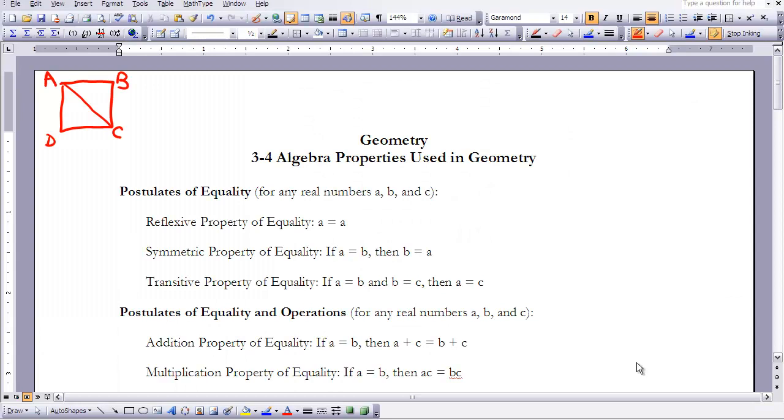This is Geometry Lesson 3-4, Algebra Properties Used in Geometry. In Algebra last year, you studied all kinds of equations, and you learned how to solve an equation for a variable and manipulate your equation so that you could isolate a variable on one side.